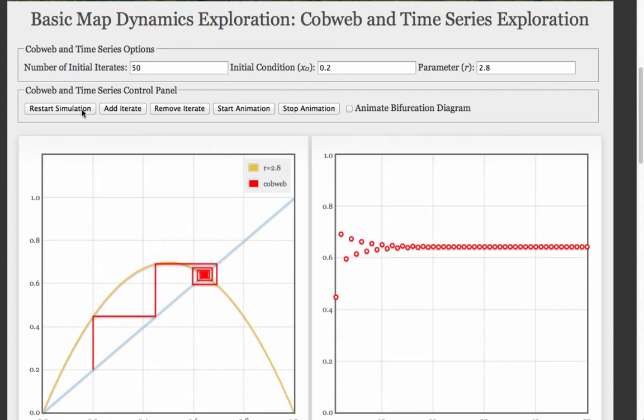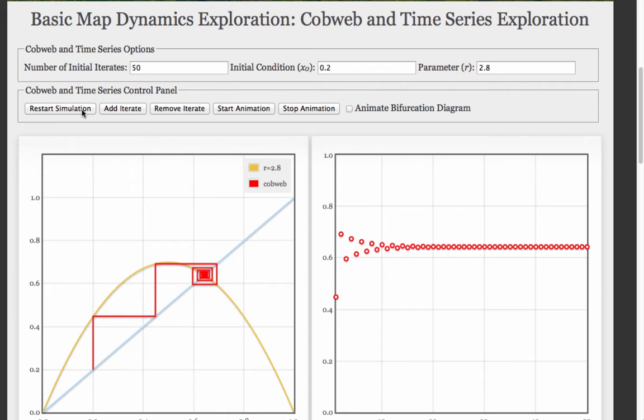At 2.8, still converging in an oscillatory fashion but the transient has gotten longer. It's taking longer to converge to that fixed point. At 2.9, the transient is getting much longer.